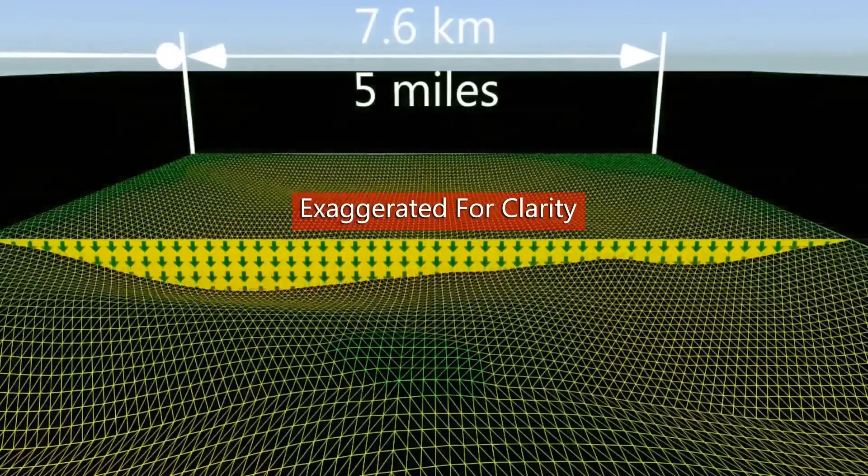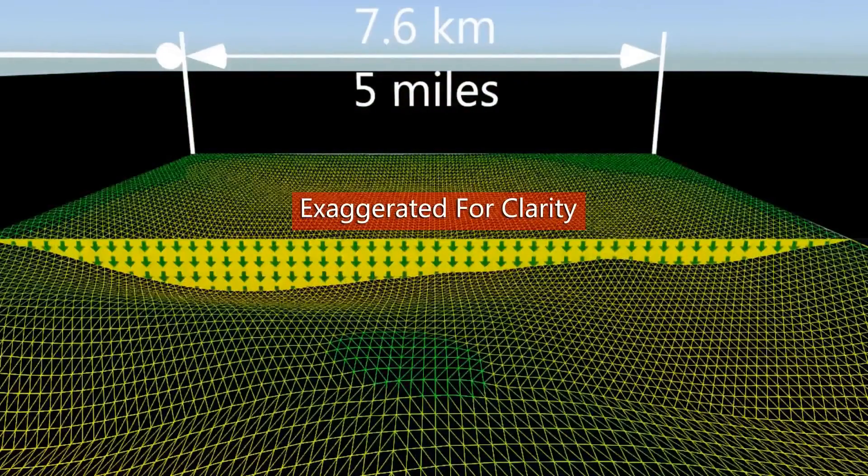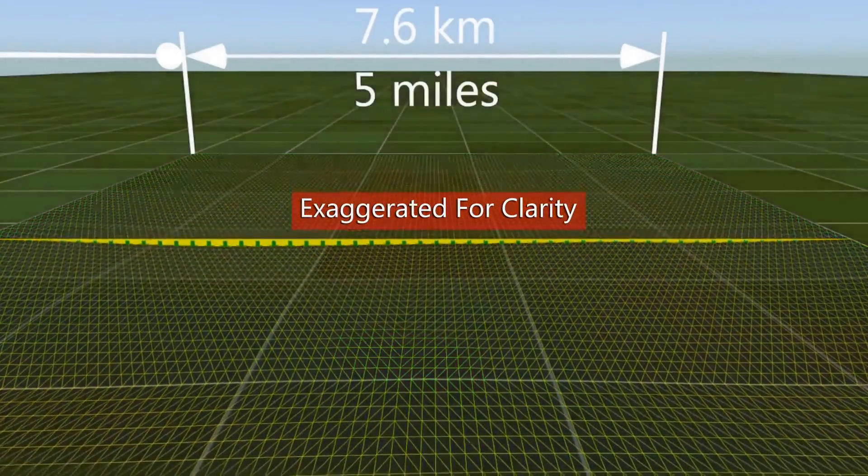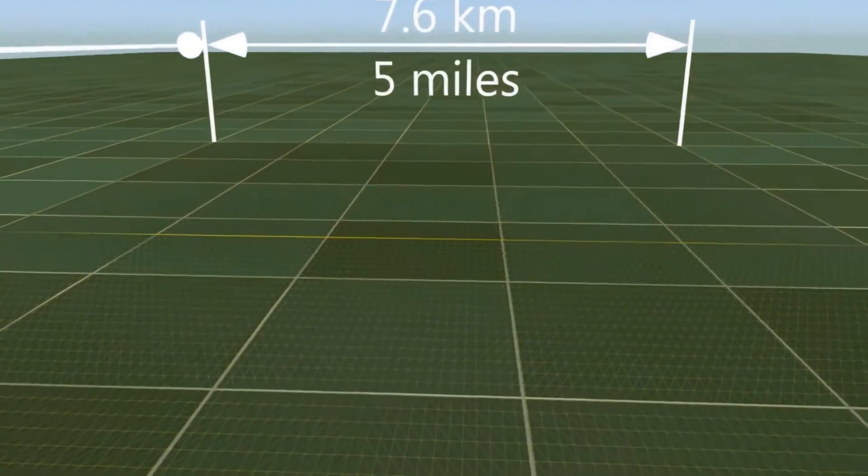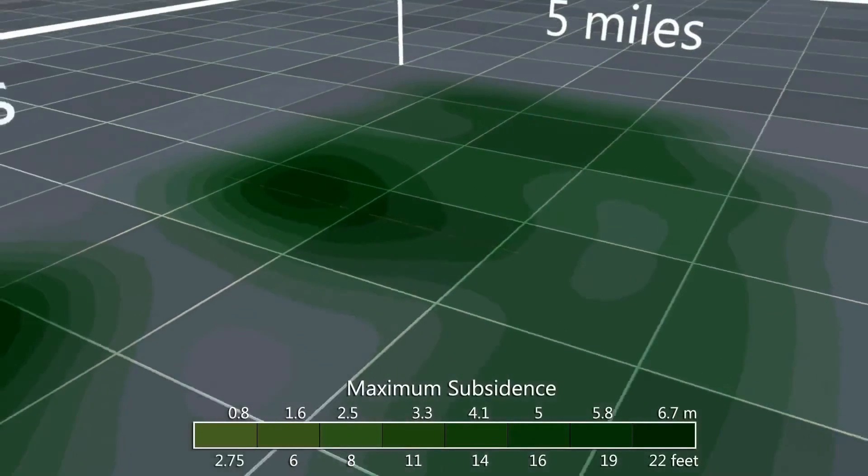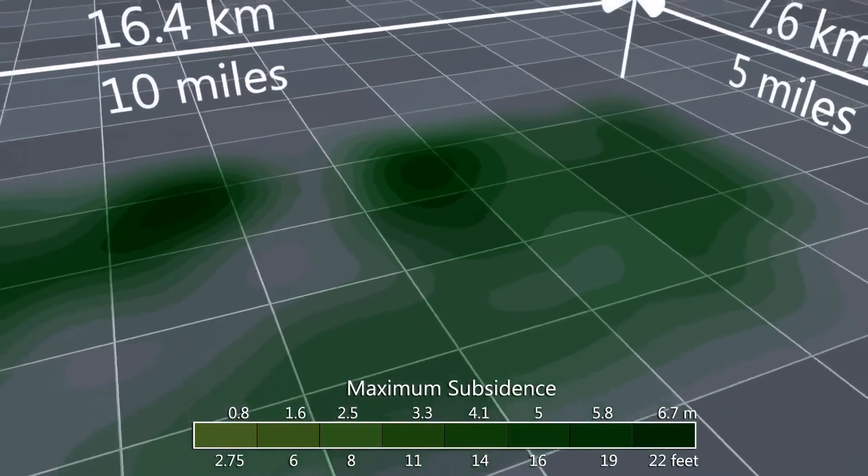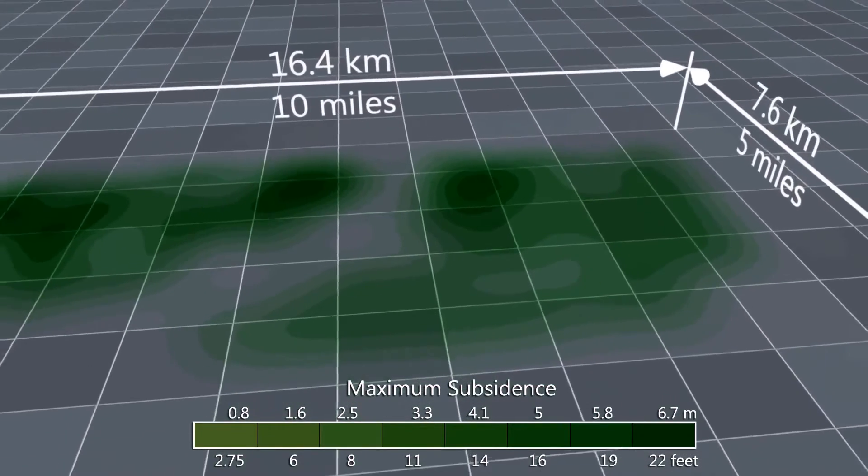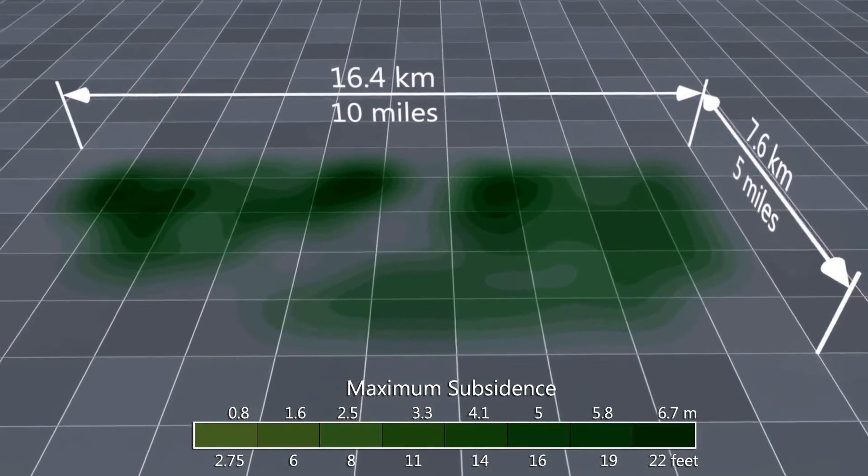On the local scale, the ultimate subsidence is predicted to result in a change of 0.2 inches across 3.3 feet. Therefore, the maximum slope of the subsidence is expected to be 0.22 degrees. This will not be observable to the naked eye.